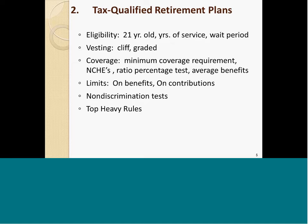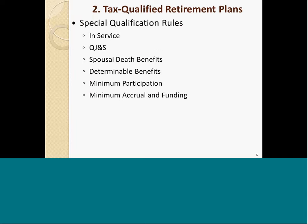There's also the concept of top-heavy rules, which is a situation where the highly compensated are considered to be holding too high a percentage of the benefits under a plan or group of plans. This happens if 60% or more of the benefits are held by key employees, and top-heavy plans have their own set of consequences.